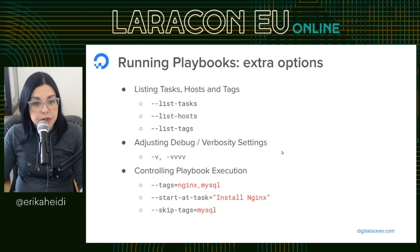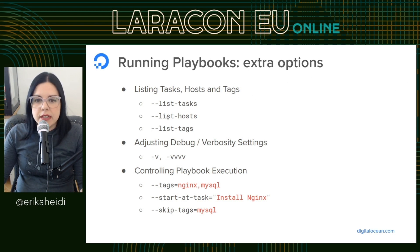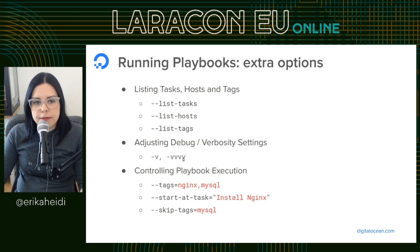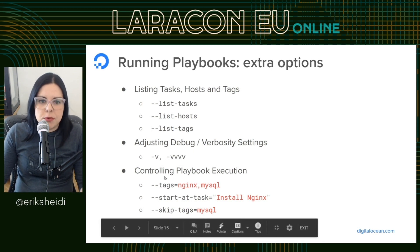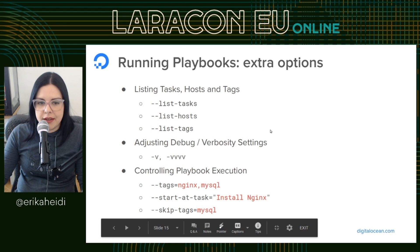Some additional options when running playbooks: if you only want to check what would be executed without actually running, you can use `--list-tasks`, `--list-hosts`, or `--list-tags`. Verbosity settings are very useful — if you're having trouble with SSH connections, use `-v`, `-vv`, `-vvv`, or `-vvvv` for detailed SSH connection information. To control playbook execution you have tags, `--start-at-task`, and `--skip-tags`, which are fairly self-explanatory.